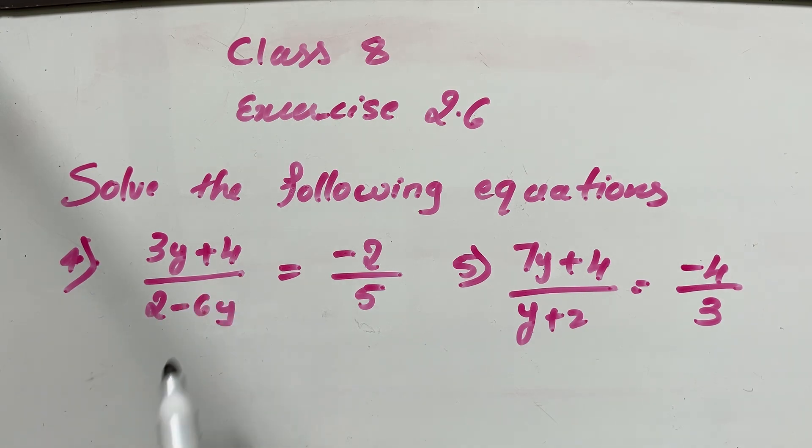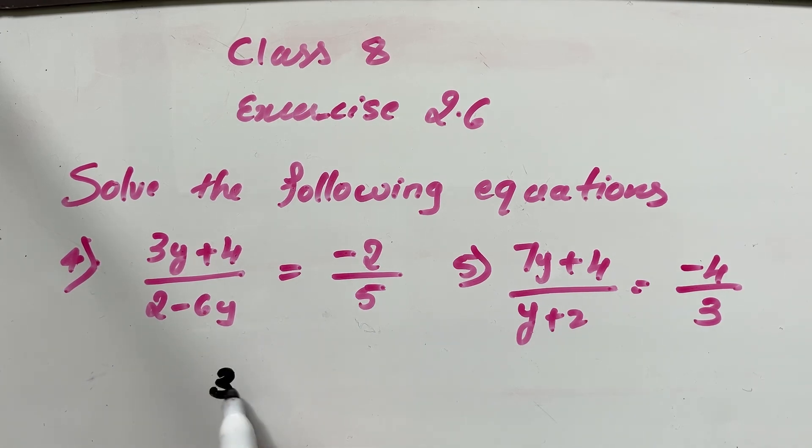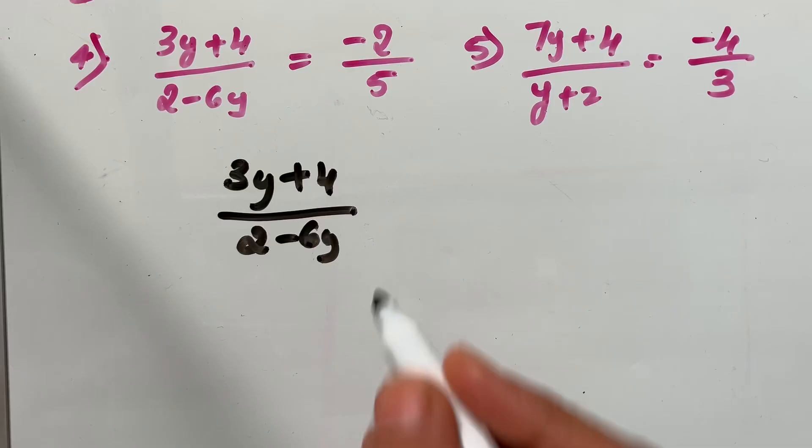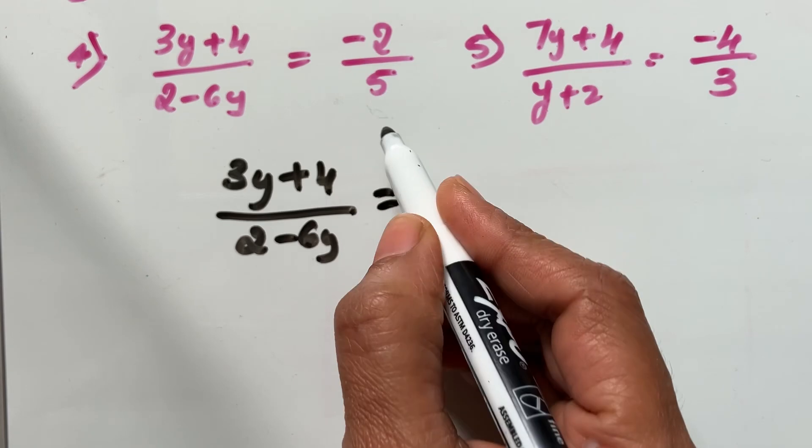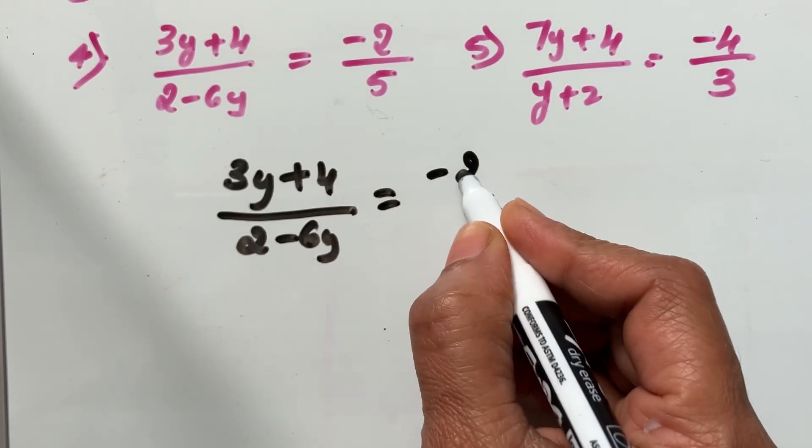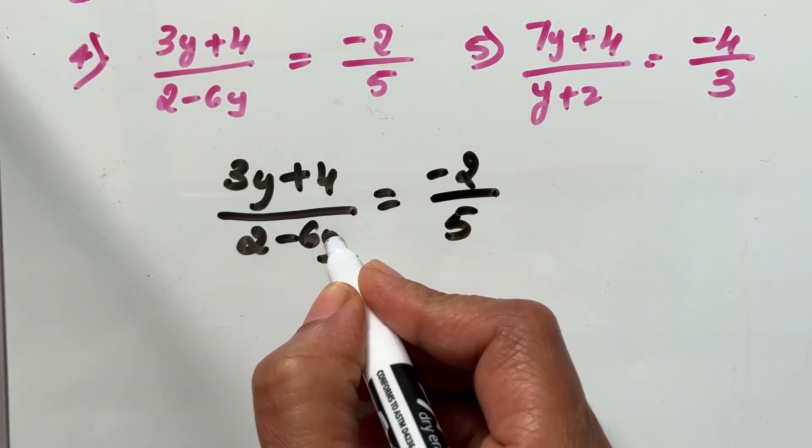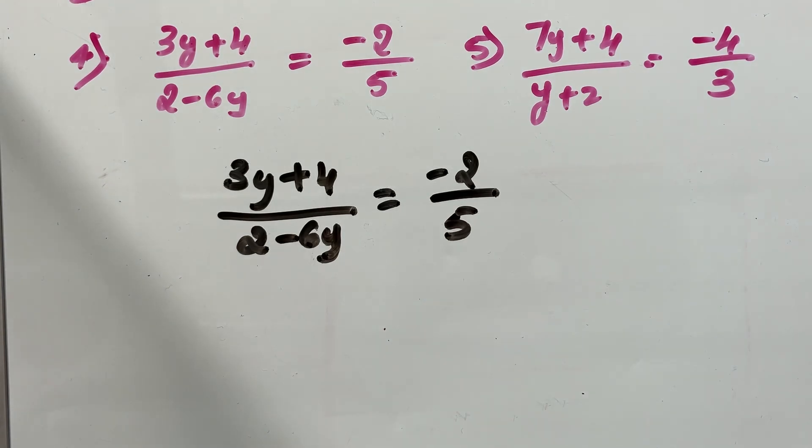3y plus 4 divided by 2 minus 6y is equal to negative 2 over 5. First question is 3y plus 4 divided by 2 minus 6y is equal to negative 2 divided by 5. We need to solve this equation and find the value of y.